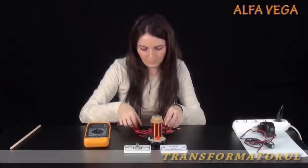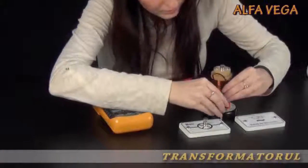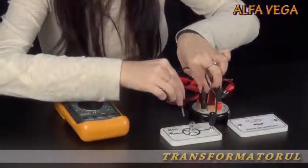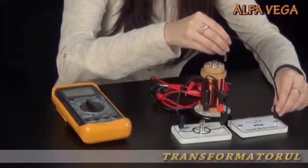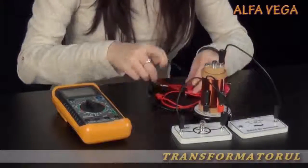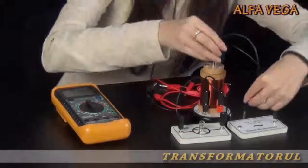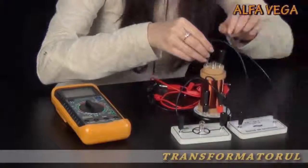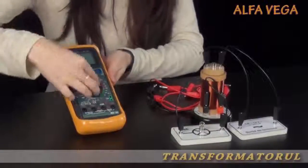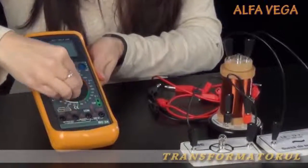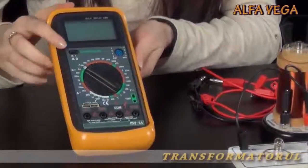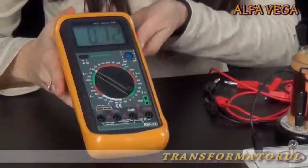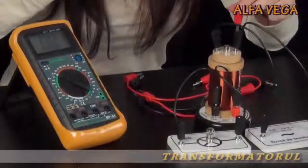La bobina exterioară se cuplează un bec de 3,5V. La bobina interioară se cuplează un curent alternativ de la sursă, tensiunea circa 5V. Se reglează un multimetru pentru măsurarea tensiunii alternative până la 20V și se conectează la bornele bobinei interioare.